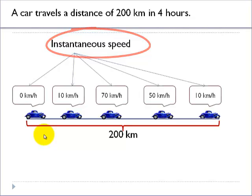So, now what is average speed? Because instantaneous speed does not help us in finding the speed of the car for the entire journey. It just gives us an idea as to at a particular point, what is the speed of the car.